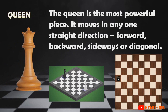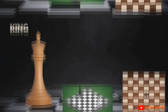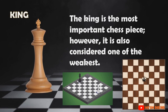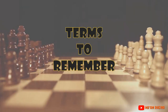The queen is the most powerful piece. It moves in any one straight direction — forward, backward, sideways, or diagonal — combining the rook and bishop. The king is the most important chess piece; however, it is also considered one of the weakest. If you lose the king, you lose the game, so you need to protect him at all costs.